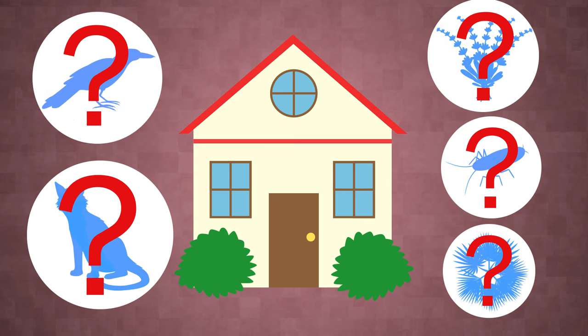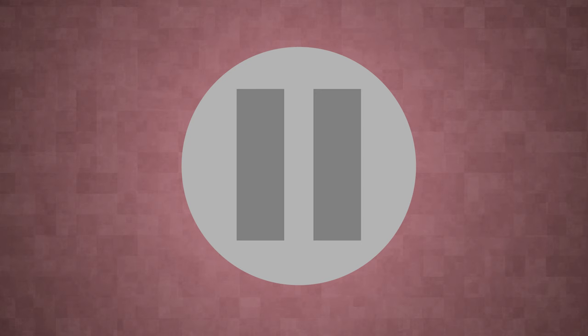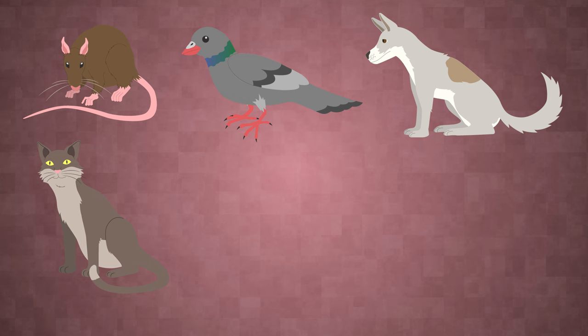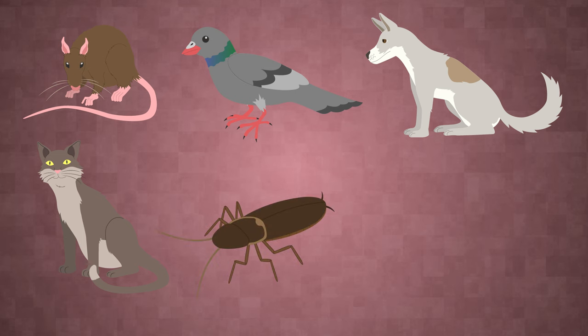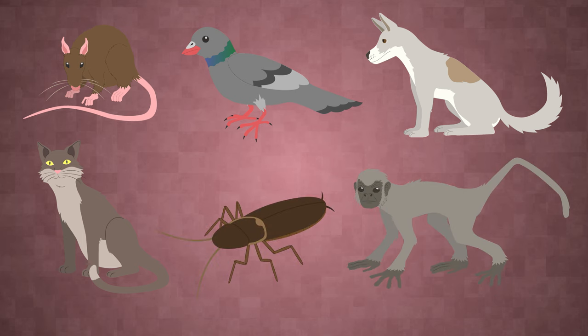Can you think of some animals that are commonly found in urban environments? Pause the video and have a think. The list is too long, but some examples are rats, pigeons, dogs, cats, cockroaches, and even monkeys.